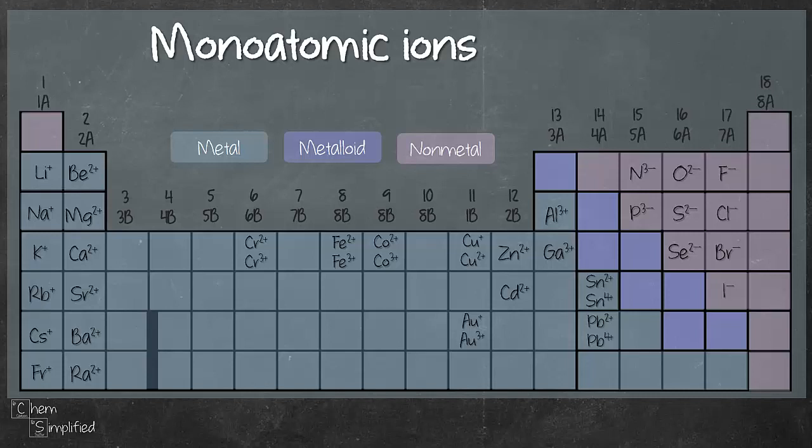Before we begin, here are some commonly used ions. Notice that group 1 metals have +1 charge, group 2 metals has +2 charge, group 3 has +3.